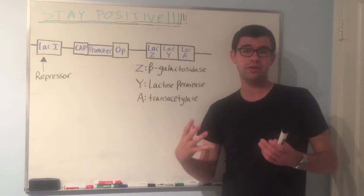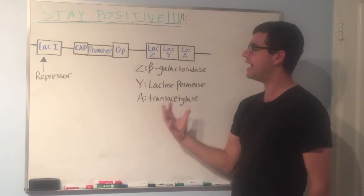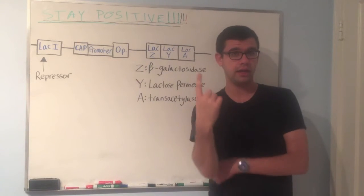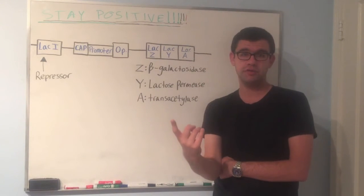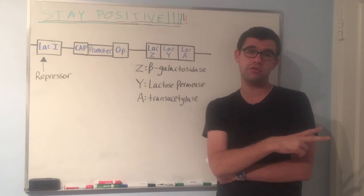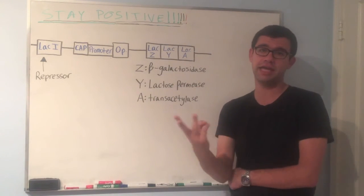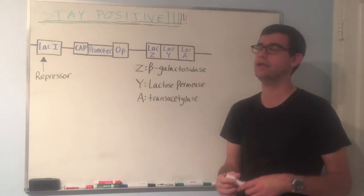So if you're asked the question, when do you have the maximal expression of Z, Y, and A, the answer is during high concentration of lactose and low concentration of glucose, or high concentration of lactose and high concentration of cyclic AMP is probably the more accurate answer.